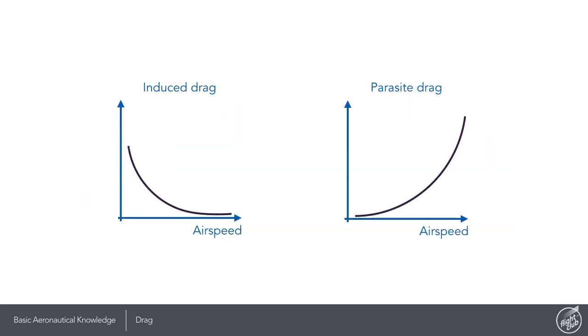These graphs represent induced and parasite drag against the airspeed. Induced drag is most significant at low air speeds and high angles of attack where the pressure differential between the top and bottom of the wing is the greatest. On the other hand an increase in the airspeed increases parasite drag by a factor of the square of airspeed. So if you double the airspeed for example you get four times the parasite drag.